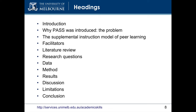Now that we've finished skimming the paper, we've got a really good overview of the content and the structure. Having established credibility, we can conclude that it supports the idea that peer learning programs have a positive impact on academic achievement under certain conditions. This paper would definitely be worth reading in detail. So let's sum up.